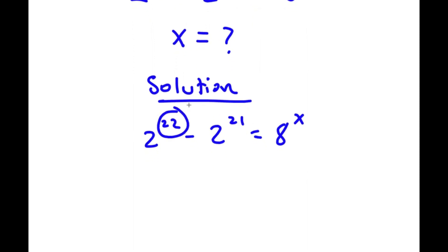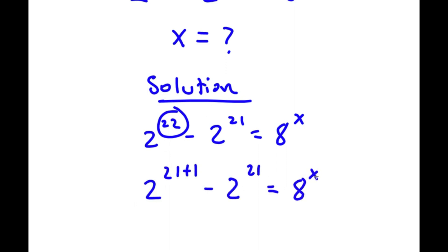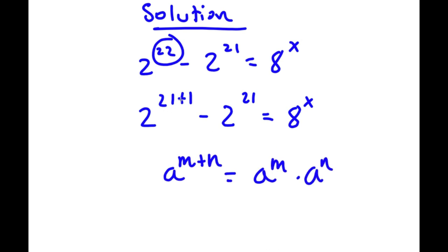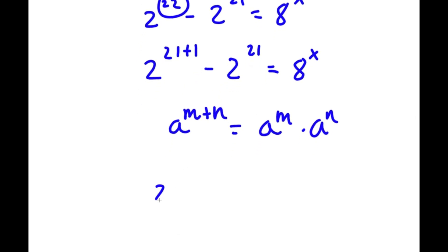Now, 22 is the same thing as 21 plus 1, so I'm going to rewrite this as 2 to the power of 21 plus 1 minus 2 to the power of 21 is equal to 8 to the power of x. If I have something in the form a to the power of m plus n, this equals a to the power of m times a to the power of n. So 2 to the power of 21 plus 1 becomes 2 to the power of 21 times 2 to the power of 1, and I still have minus 2 to the power of 21 is equal to 8 to the power of x.